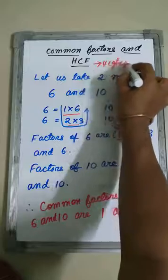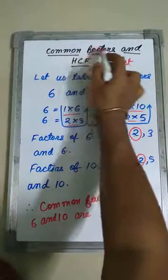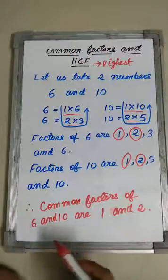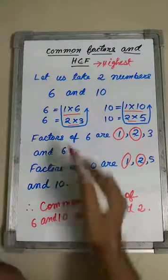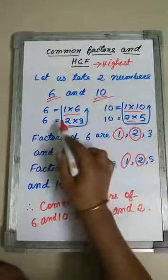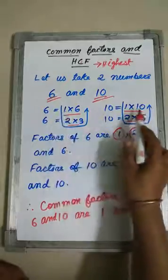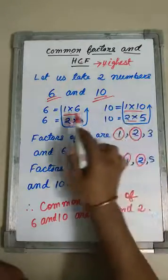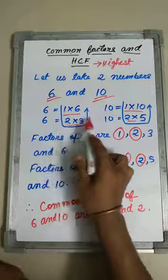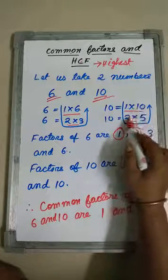Highest common factor, common factors. Let us take two numbers, 6 and 10. I am writing the common factors of 6 and 10. For 6, it is 1 into 6 and 2 into 3. For 10, 1 into 10, 2 into 5.